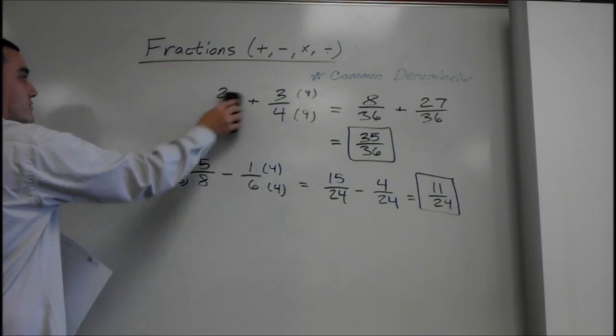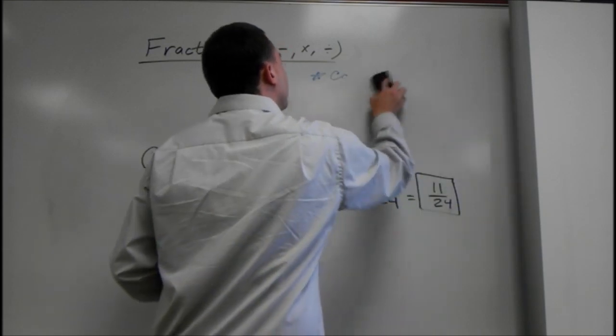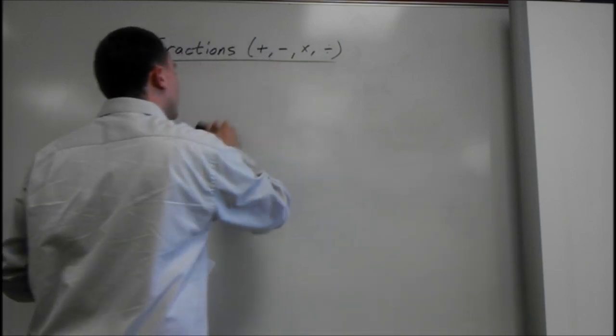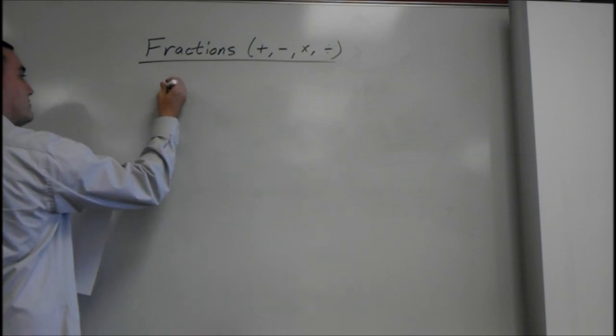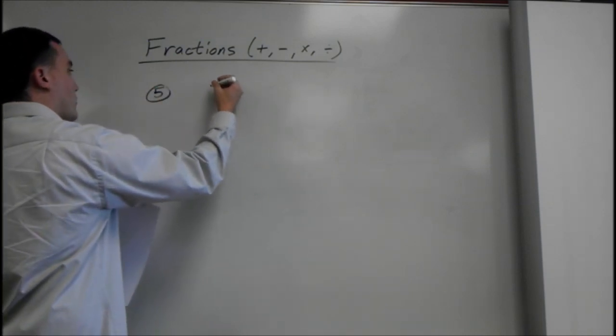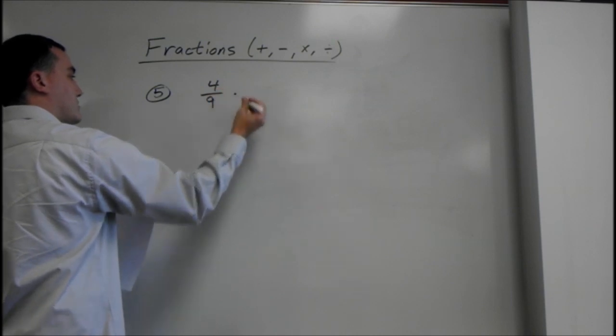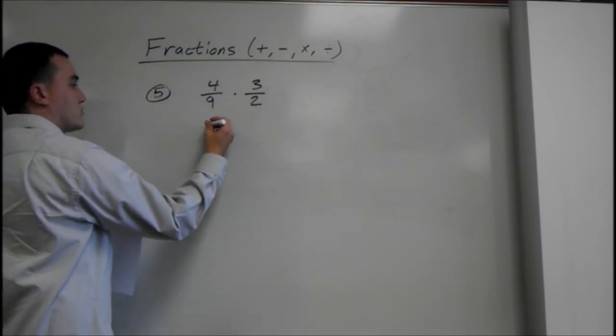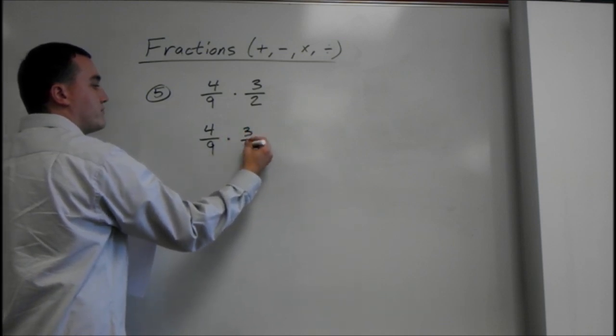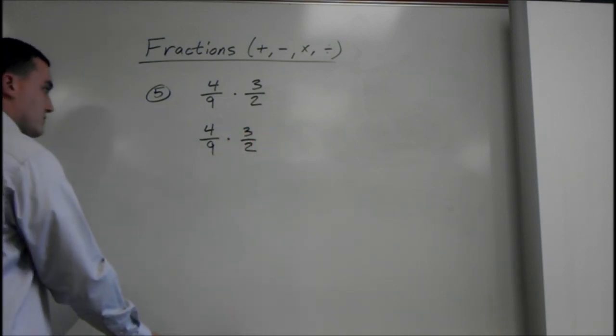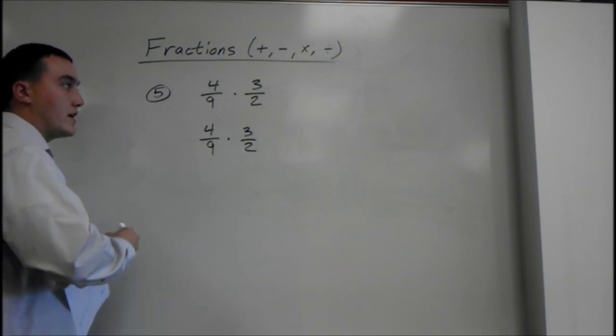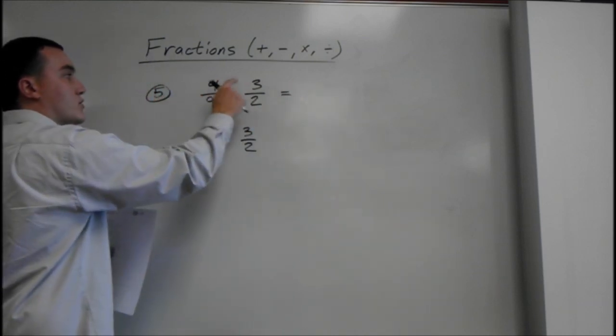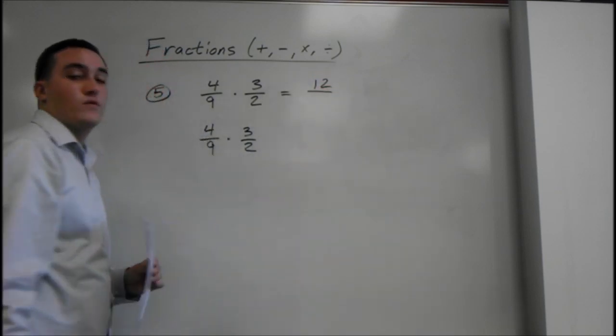Okay. Next, multiplication and division. Alright. For multiplication, number 5. Say we have 4 over 9 times 3 over 2. And I'm actually going to show you two ways to do this one. 4 over 9 times 3 over 2. So, the first thing we can do, and this is kind of an easier way, is just multiply across and then we can reduce later. Alright. So, we have 4 times 3 is 12 over 9 times 2 is 18.